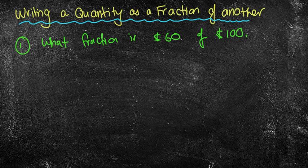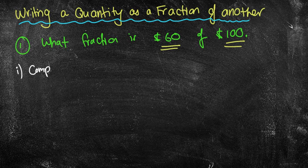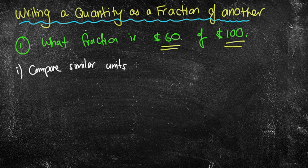So it's asking you to write one quantity, which in this case would be the $60, as a fraction of another quantity, which is the $100. Now, there's a couple of important things that need to happen. The first one, which is the most important, which in this case it does, we need to compare the same units or similar units. For example, we're comparing dollars with dollars. So that's perfect. If it was dollars and cents, that would be an issue. We'd have to change it.